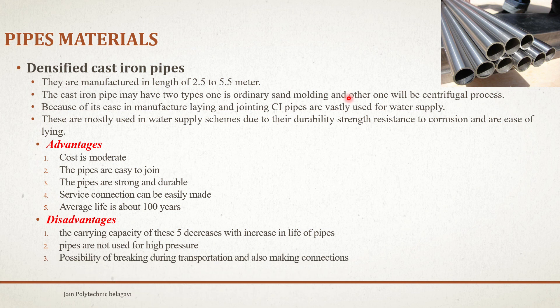There is also a possibility of breaking during transportation and while making connections — edges may get cut, leading to leakages, and cracks may develop during transport. Finally, CI pipes are heavy and the transportation cost is more because they are made of iron, making them heavier to transport and lay.